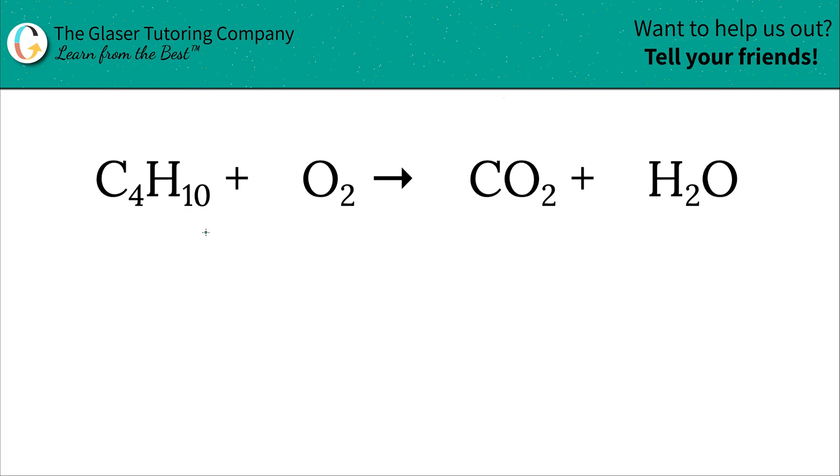There's several other isomers when you get to organic chemistry. And by the way, if you do get to organic chemistry, please come back and check out our channel. By that time, we're going to have a lot of help out there for you on that particular subject. So we have C4H10 plus O2 yields carbon dioxide plus water. So how do we do this?